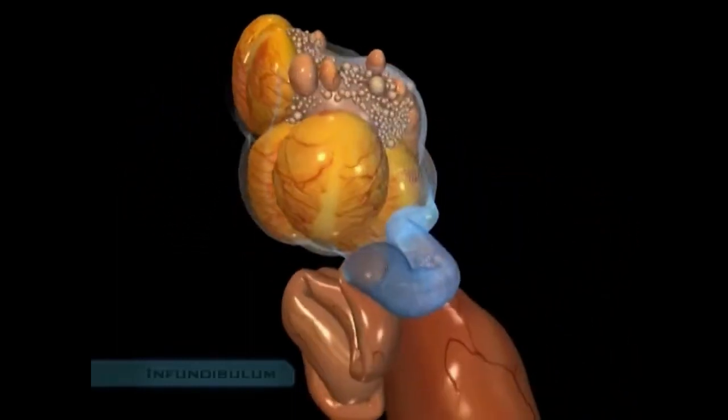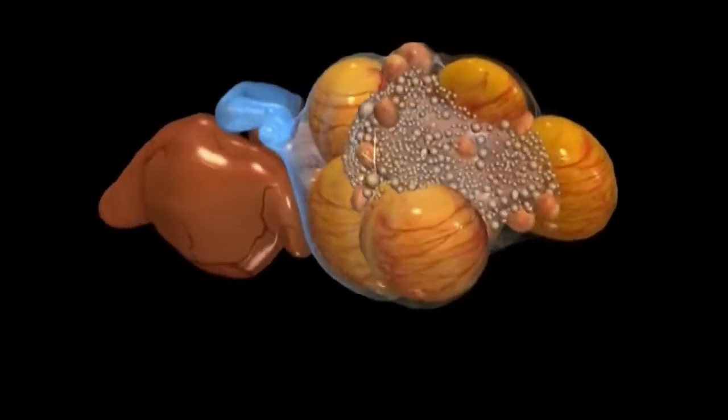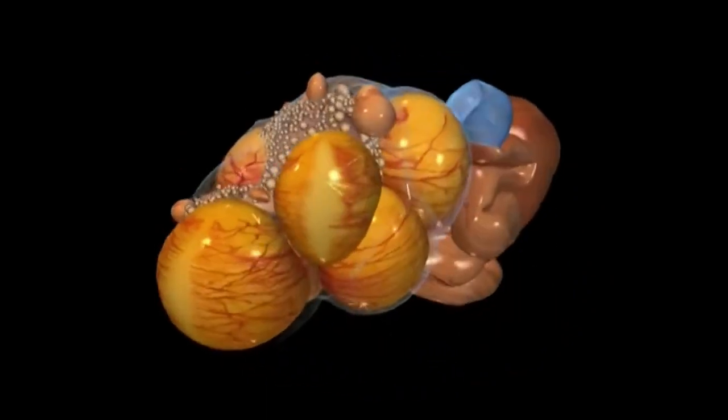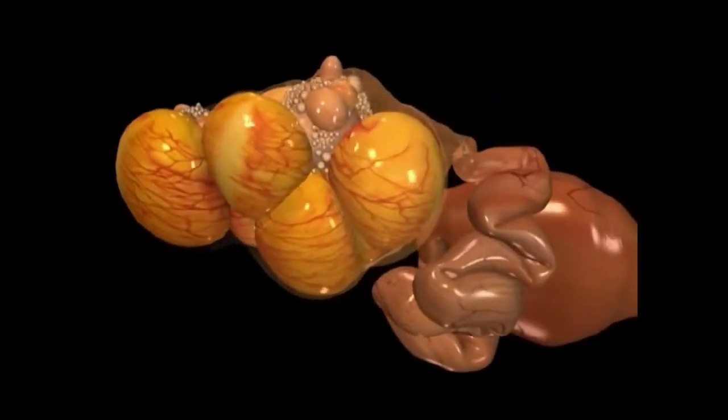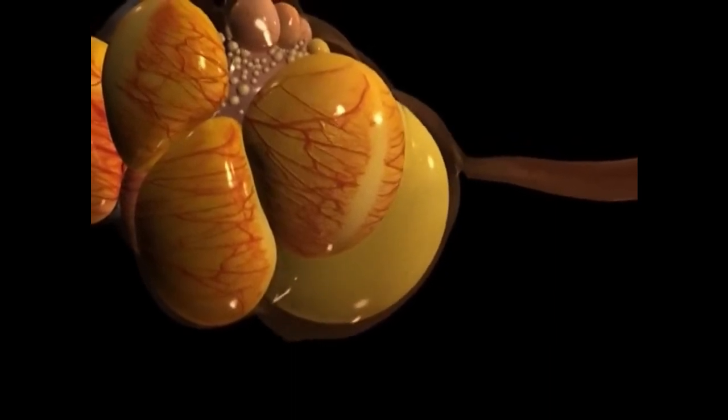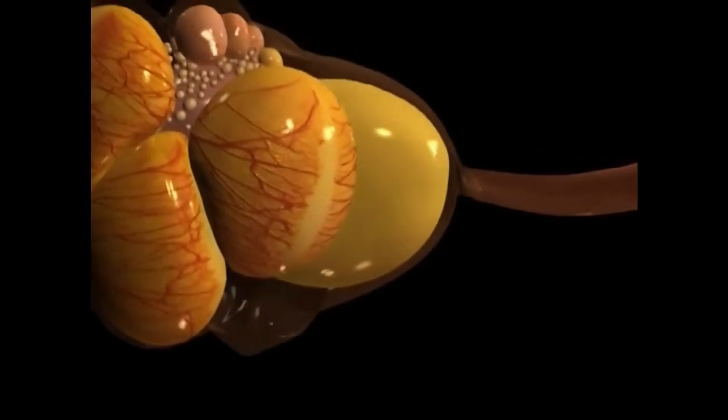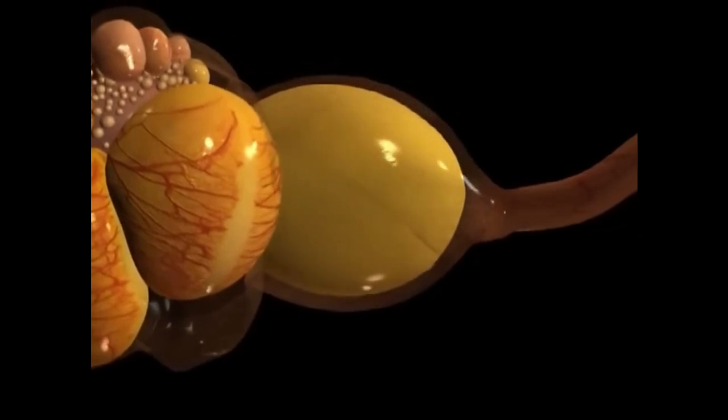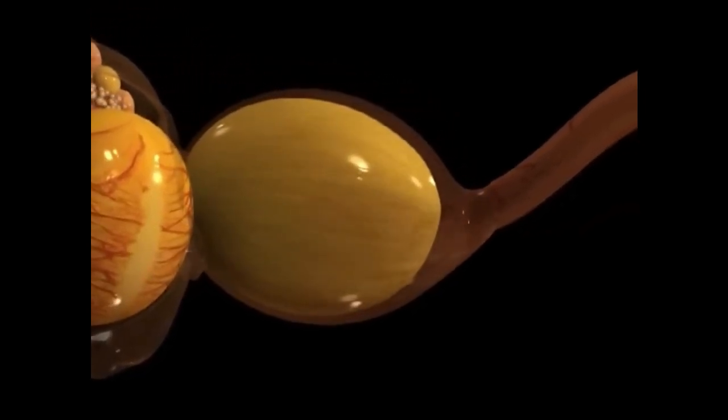Called the infundibulum, the funnel-shaped upper end of the oviduct envelops the ovary and catches the most mature follicle as it reaches maturation and ovulates. Then the yolk embarks on a 24-hour journey down the oviduct.